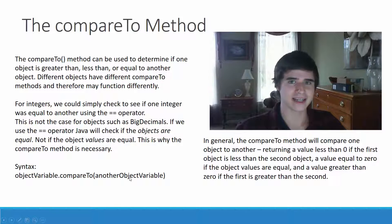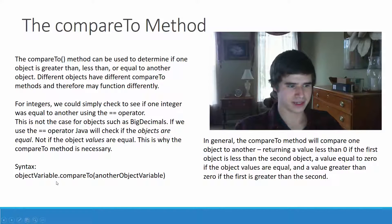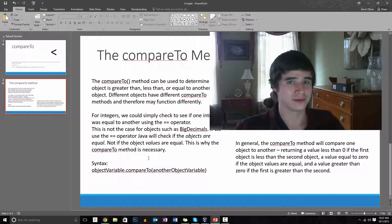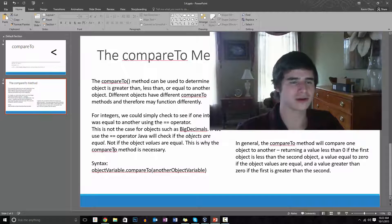Now with BigDecimals, it works a little differently. It returns negative 1 if the first decimal is less than the second BigDecimal, returns zero if the first BigDecimal is equal to the second BigDecimal, and returns 1 if the first BigDecimal is greater than the second BigDecimal. So that still follows along with the rule that it's less than or greater than zero. But just note that with BigDecimals, it actually returns negative 1, zero, and 1.